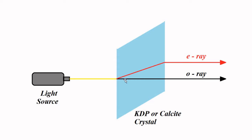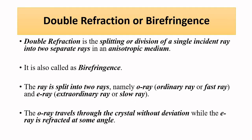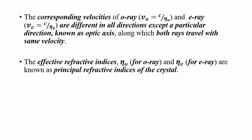The light signal splits into two parts because the region through which it passes has different refractive indices in different directions — one ray suffers refraction while the other does not. The crystal material offers two refractive indices: for the ordinary ray it is η₀ (eta-0), and for the extraordinary ray it is ηₑ (eta-e). So the crystal offers two effective refractive indices.